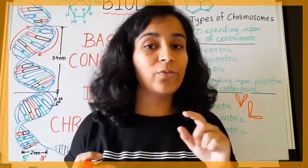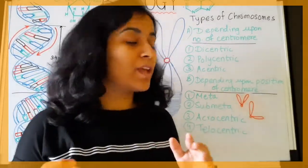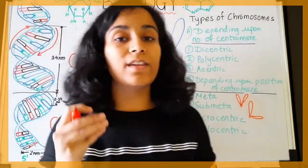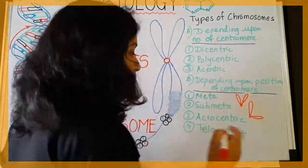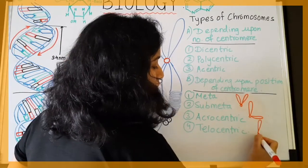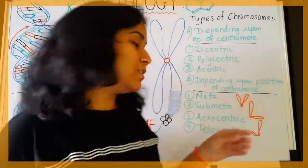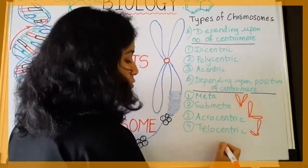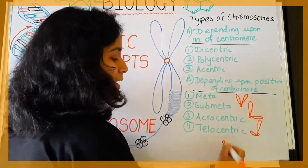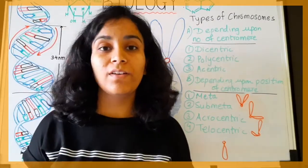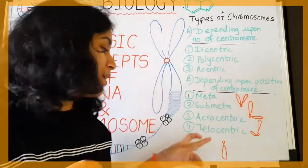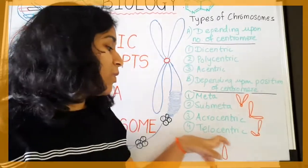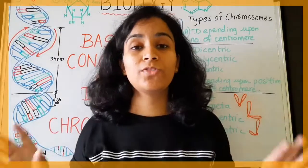In sub-metacentric chromosomes, the centromere is slightly off-center, so one arm is slightly bigger than the other, making a shape like the letter L. In acrocentric chromosomes, the centromere is towards — but not totally at — the end, making a shape like the letter J. In telocentric chromosomes, the centromere is totally at the end, in the region of the telomere.